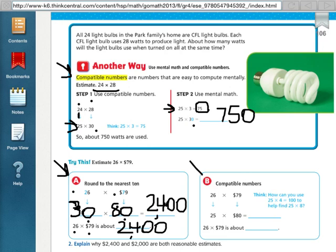Then the second way was compatible numbers and we have 26 times 79, same problem. 26, a compatible number for that is 25, and then we're just going to round the other number just like we did before, 79 rounds to 80.